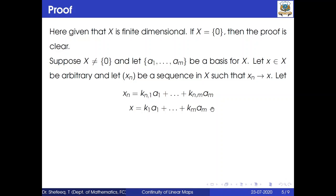We want to show that the linear map f from X to Y is continuous. To do this, we use the sequential criterion for continuity: a function from X to Y is continuous at a point if and only if for every sequence converging to that point, the image sequence also converges to the image of that point.